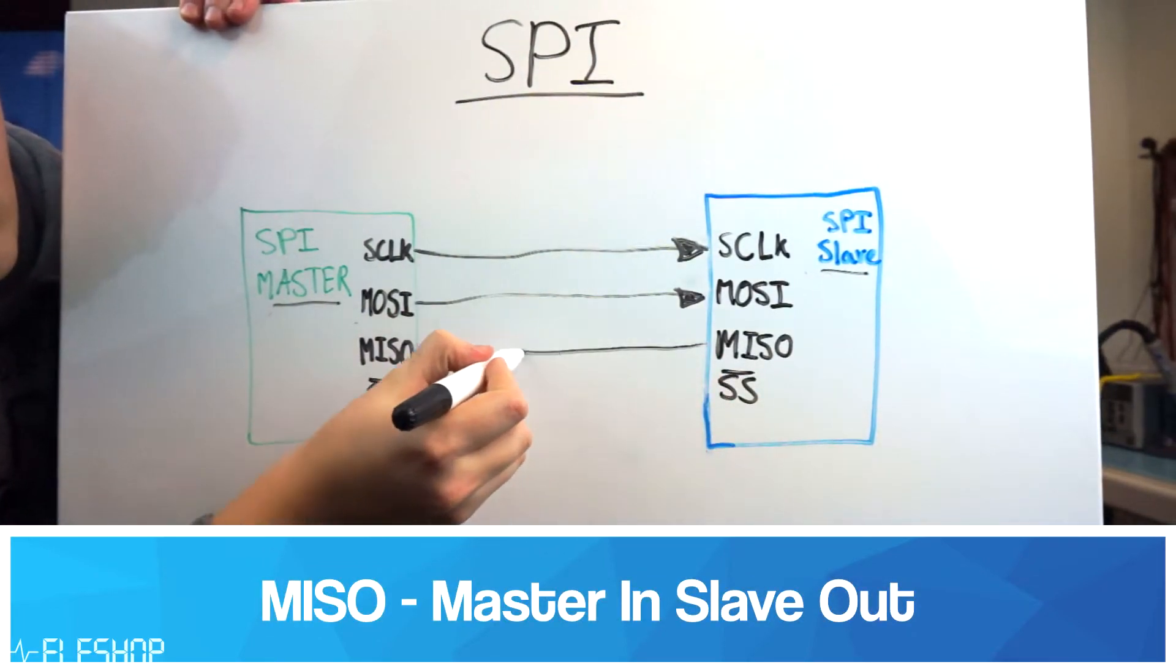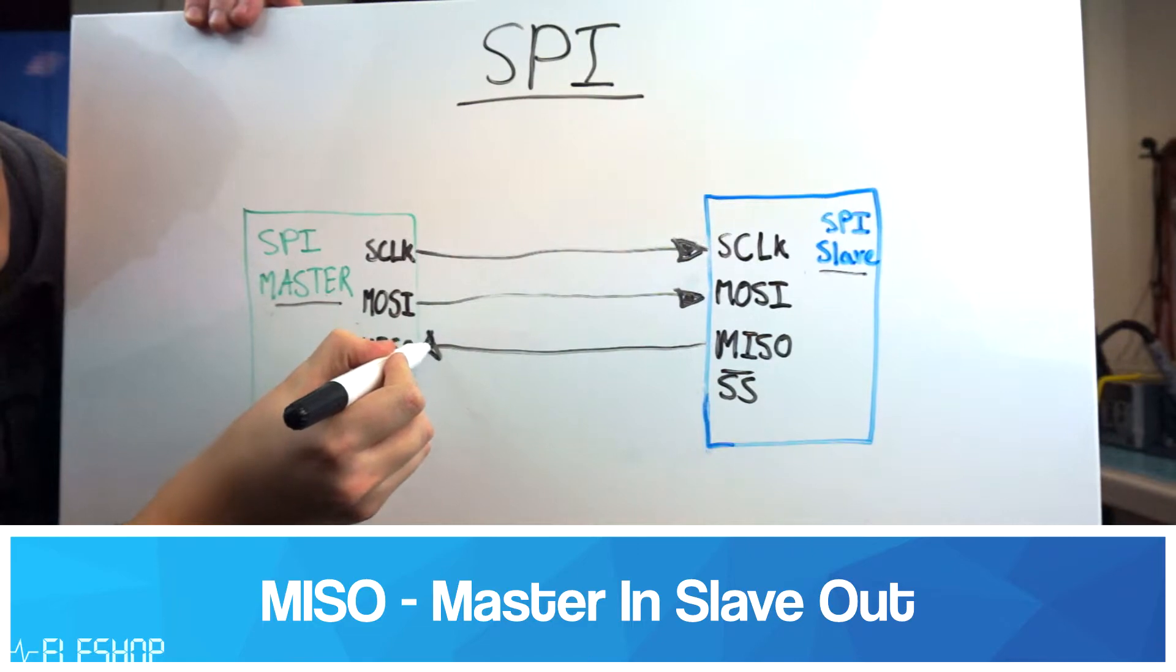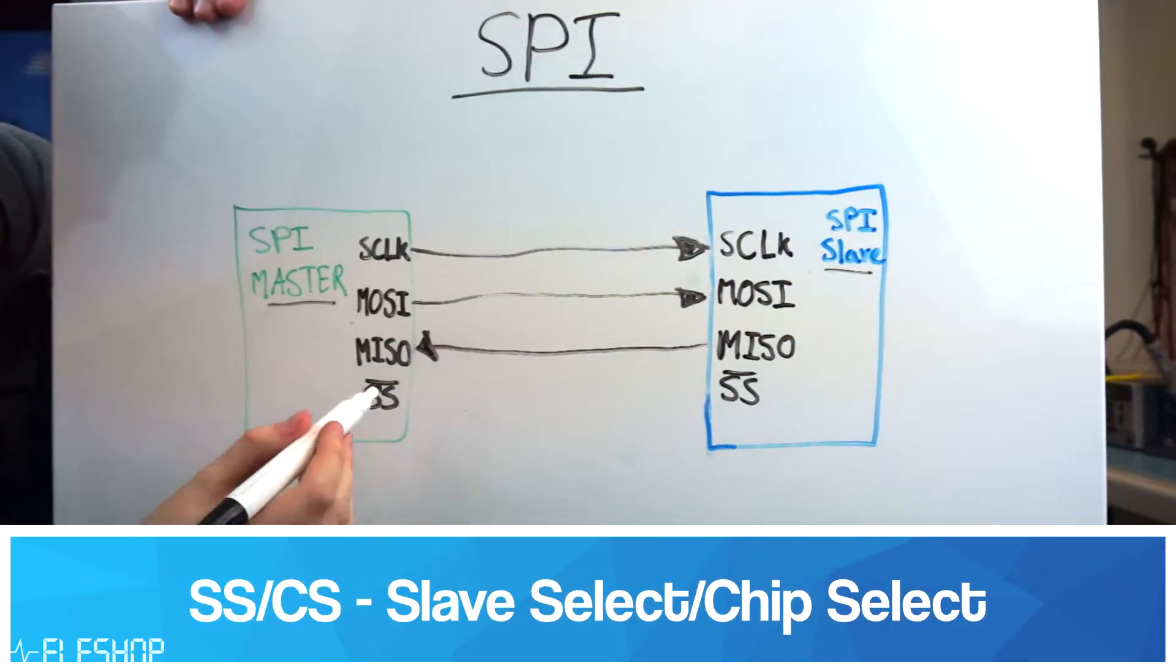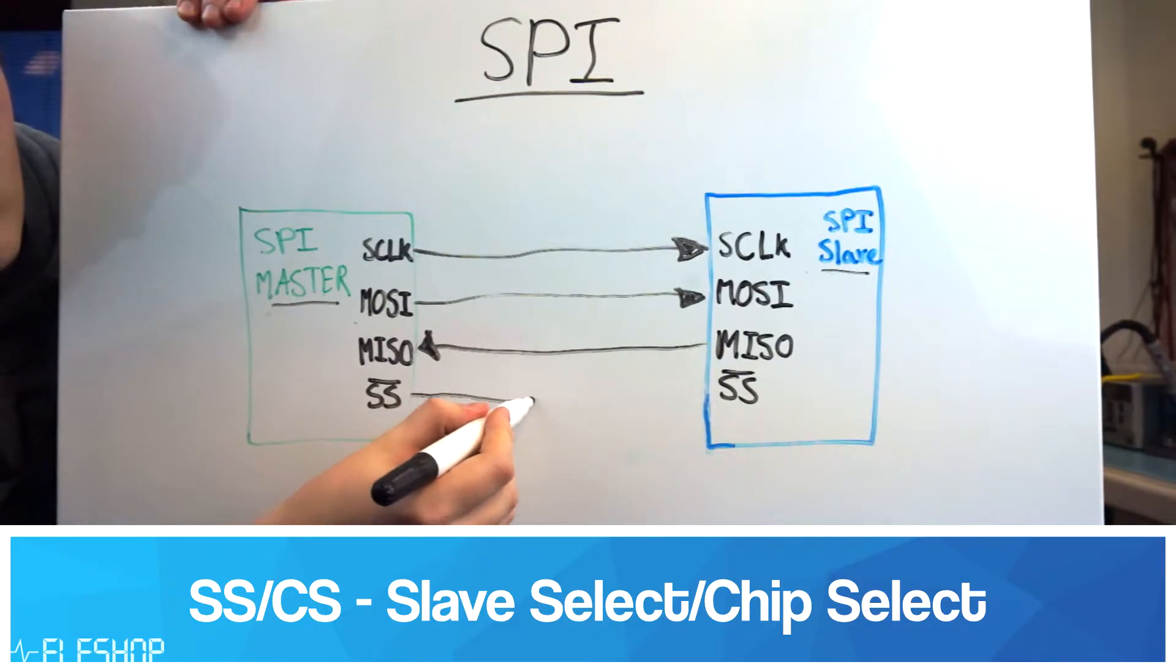MISO is master in slave out, so a data line from slave to master. And finally we have SS, which stands for slave select.